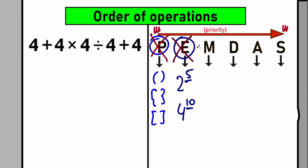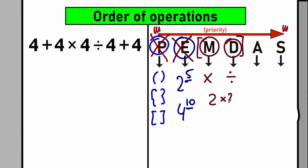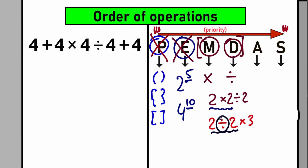One really important point: multiplication and division must be considered as one group. M stands for multiplication, D stands for division. Whenever we have a mixture of multiplication and division, we perform them in strict order from left to right. For example, with '2 × 2 ÷ 2', the first sign from left to right is multiplication, so we multiply first. But with '2 ÷ 2 × 3', division comes first from left to right, so we divide first.